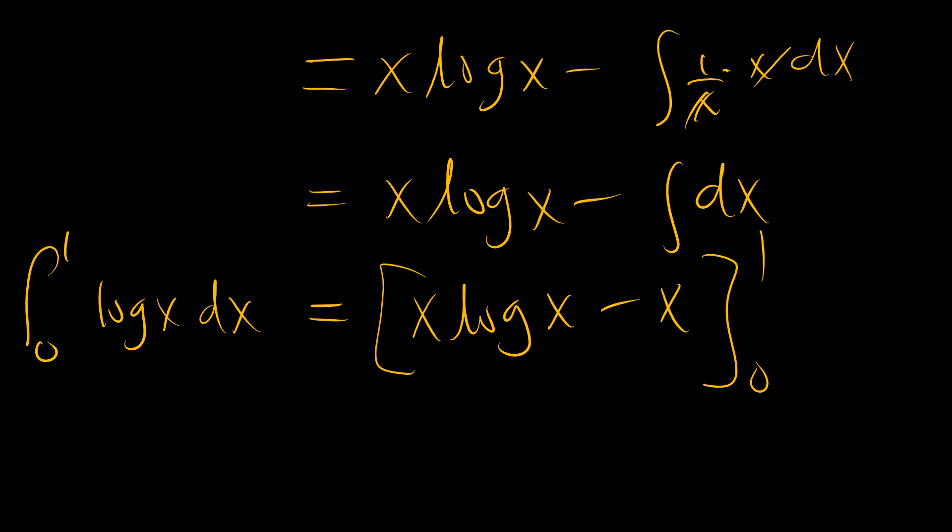At the upper limit, log(1) equals 0. At the lower limit, as x tends to 0, x log(x) goes to 0. So the x log(x) term goes to 0 at both the upper and lower limits, and we are left with negative 1 minus 0, which equals negative 1. And that is our answer.